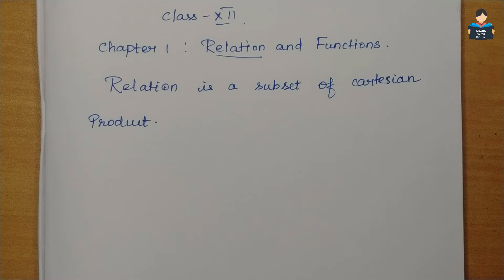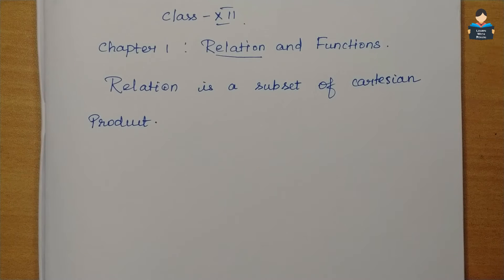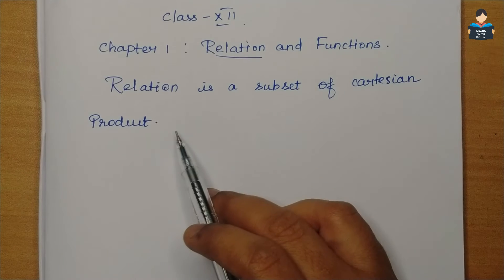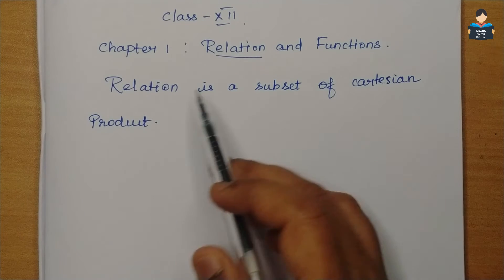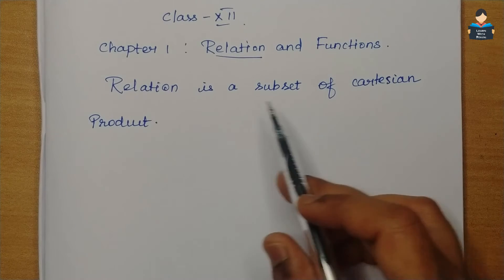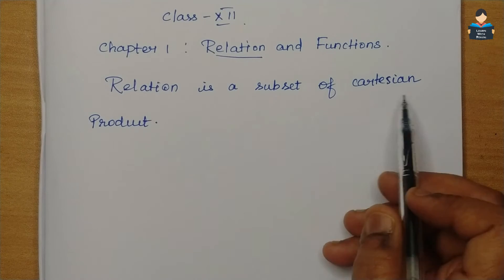Hello everyone, welcome to our channel. In this video, we cover Class 12 standard NCERT Maths, Chapter 1: Relations and Functions. In Chapter 1, Exercise 1.1, introduction part one. A relation is a subset of a Cartesian product.